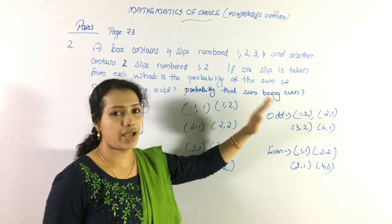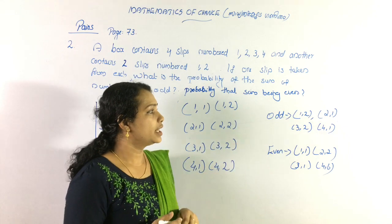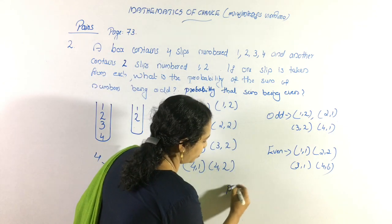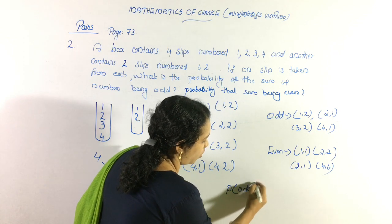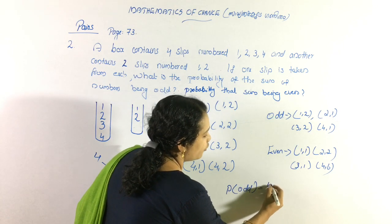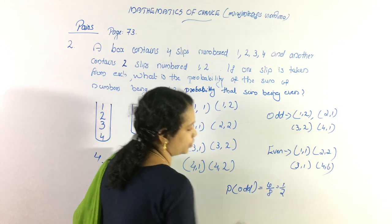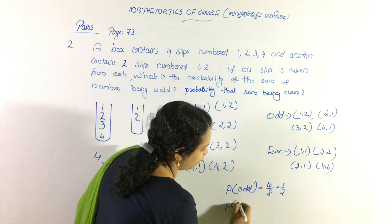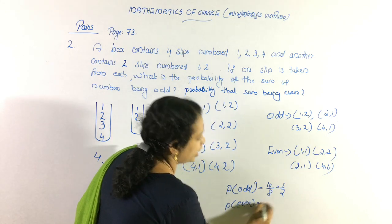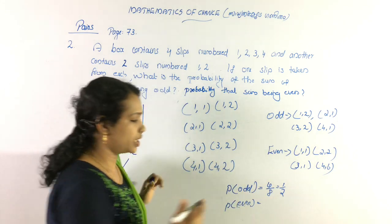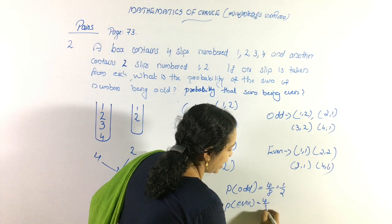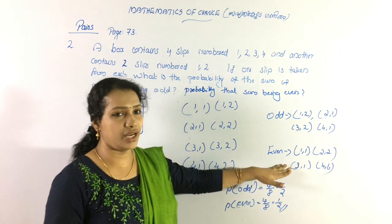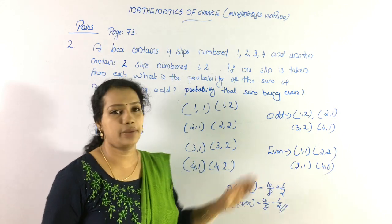There are 4 pairs with an odd sum, so the probability of an odd sum is 4 by 8, that is 1 by 2. There are also 4 pairs with an even sum, so the probability of an even sum is also 4 by 8, that is 1 by 2. The probability of odd and even sums are equal at 1 by 2.